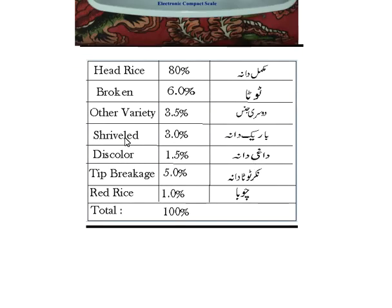Make all weights according to their quantities and calculate the percentage of each. At the end you have this pro forma in front of you: head rice 80%, broken 6%, other variety 3.5%, shriveled 3.0%, discolored 1.5%, tip breakage 5.0%, red rice 1.0%. When you add each and every quantity you get 100% of the rice.